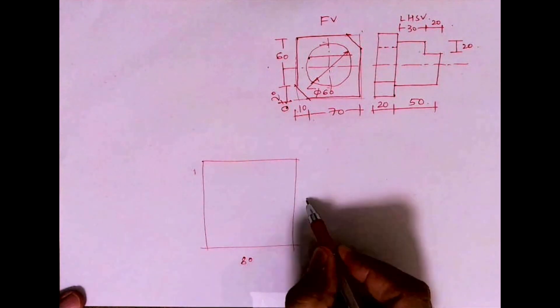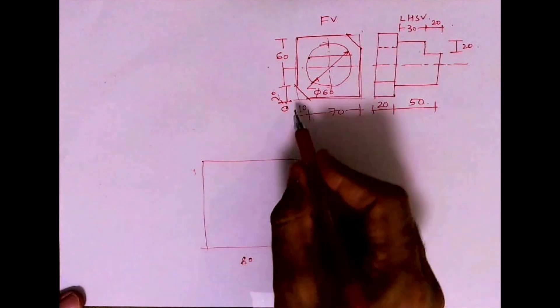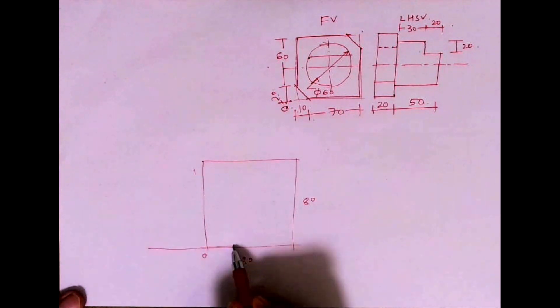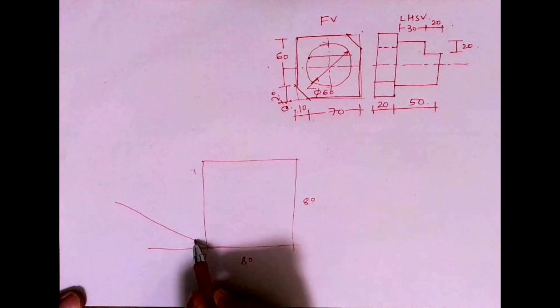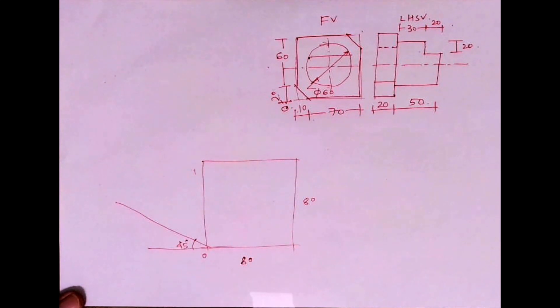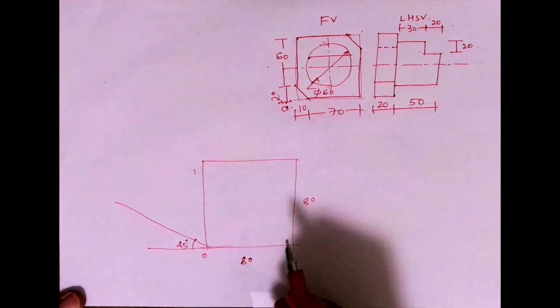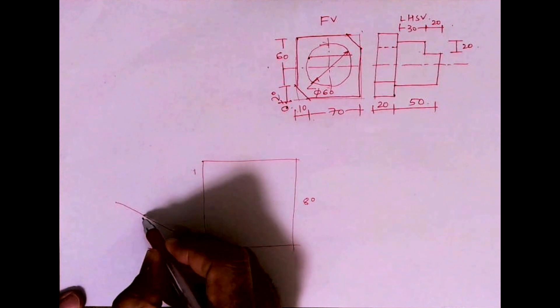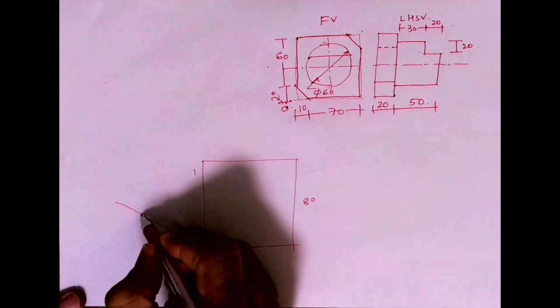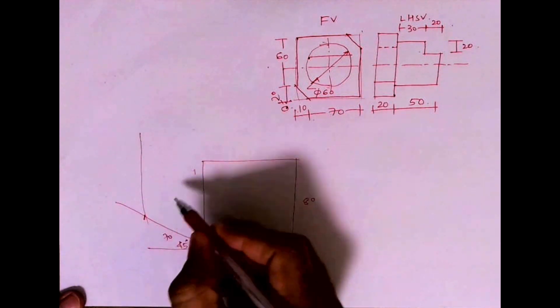It will be straight and then origin is here. So wherever we have origin, 45 degree or receding angle, we will draw it that side. How much is the width? 70. So I will take 70 on this and I will complete the layout.